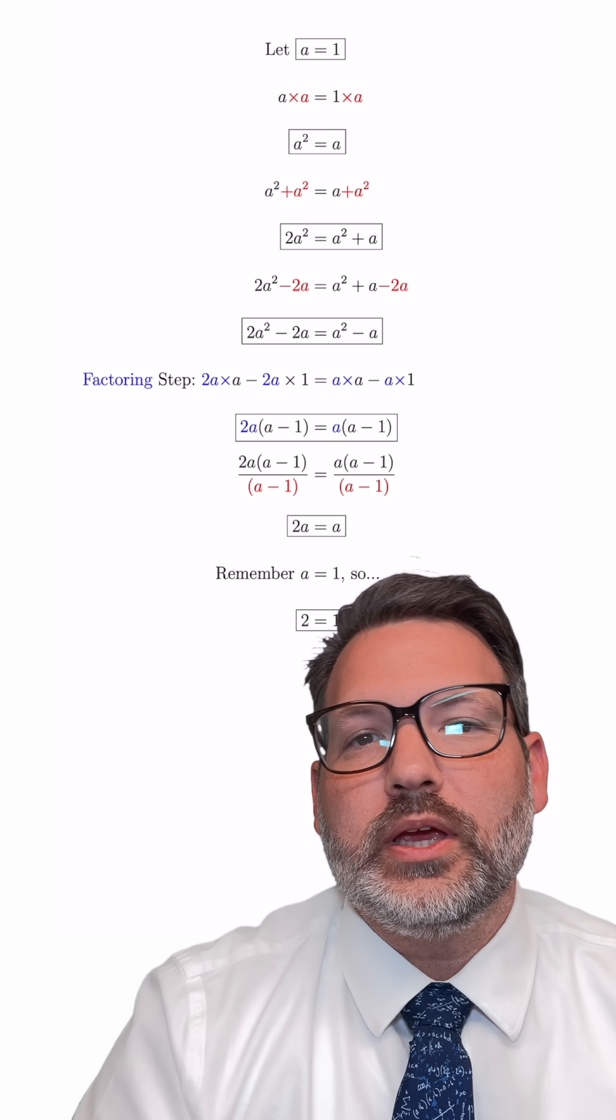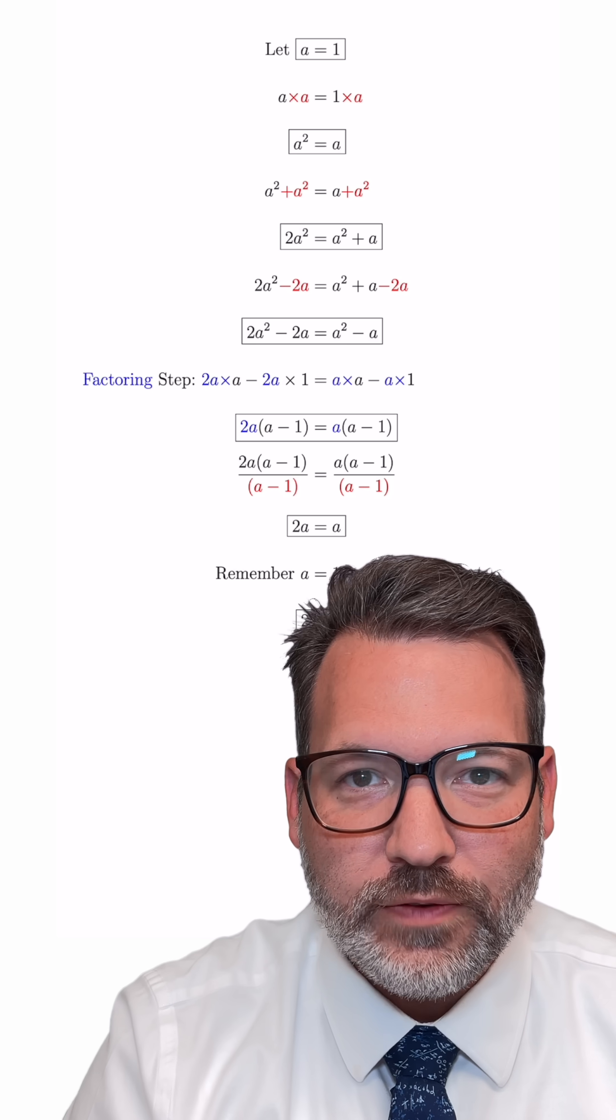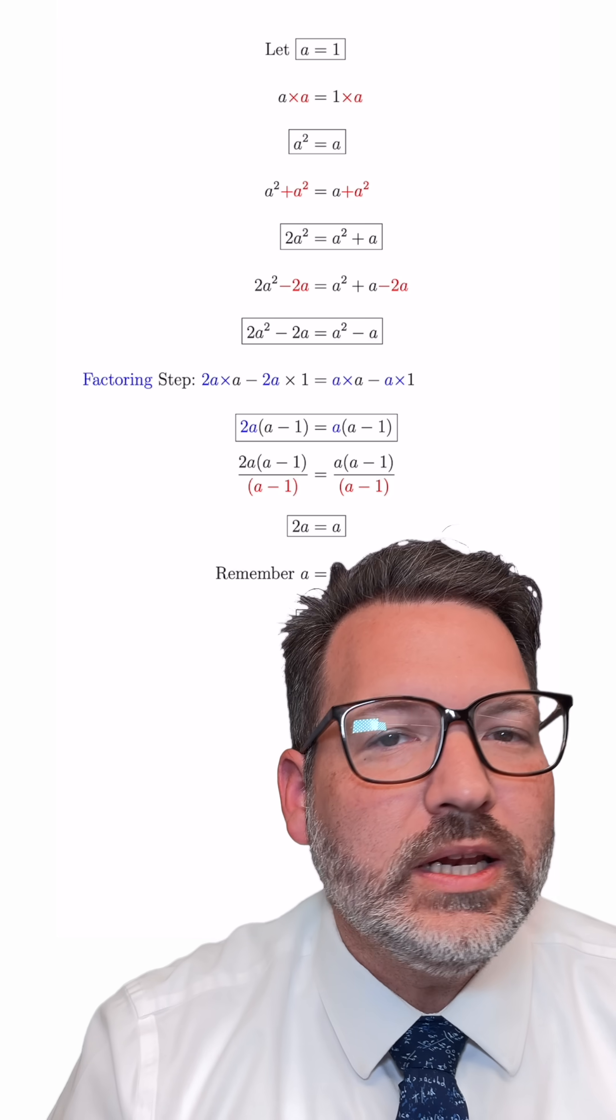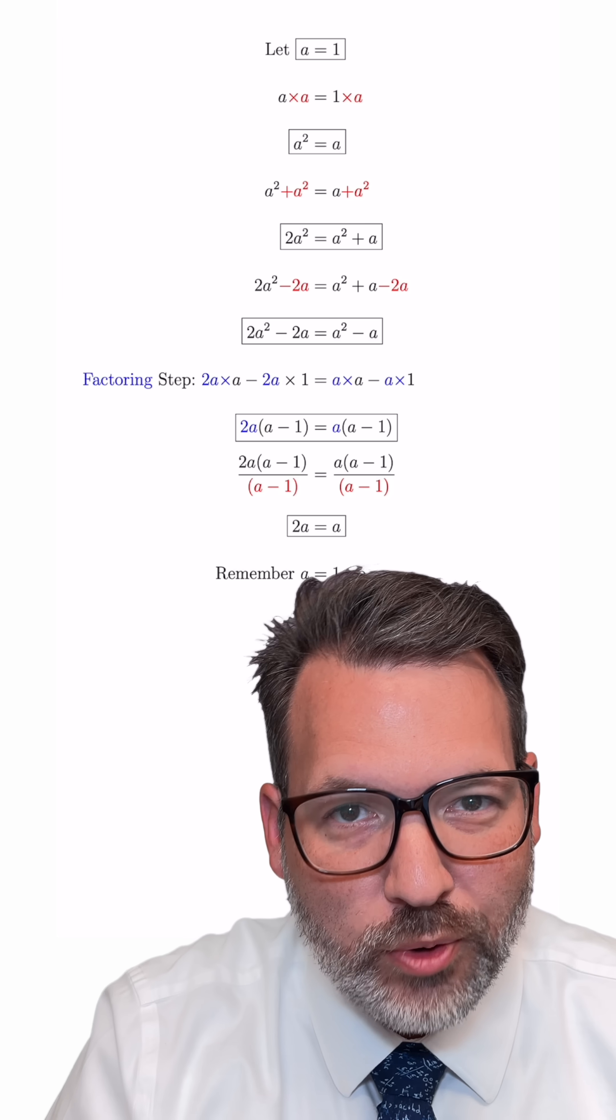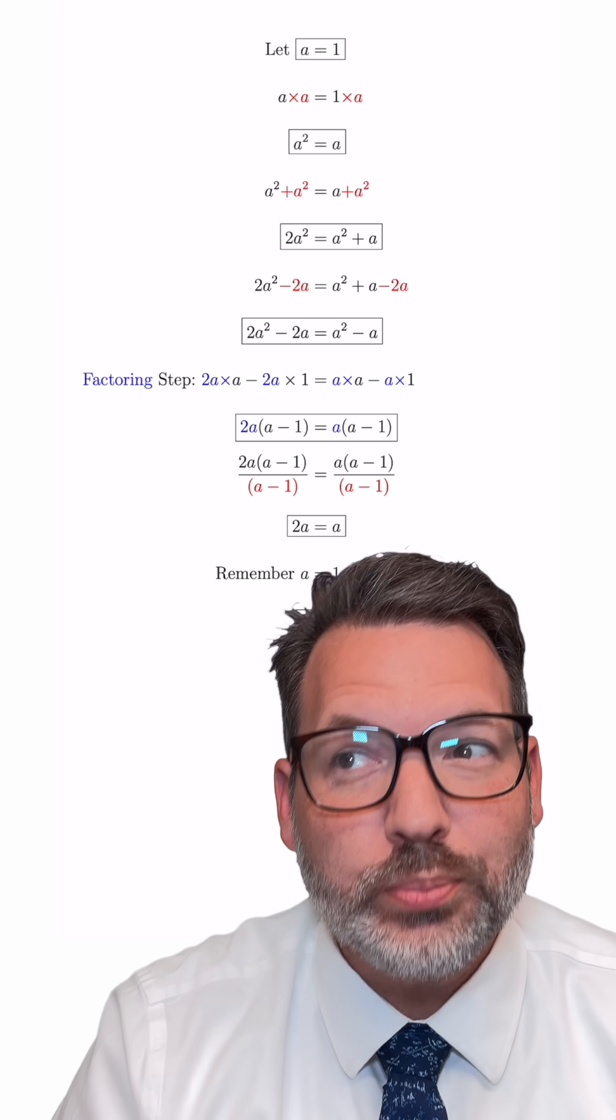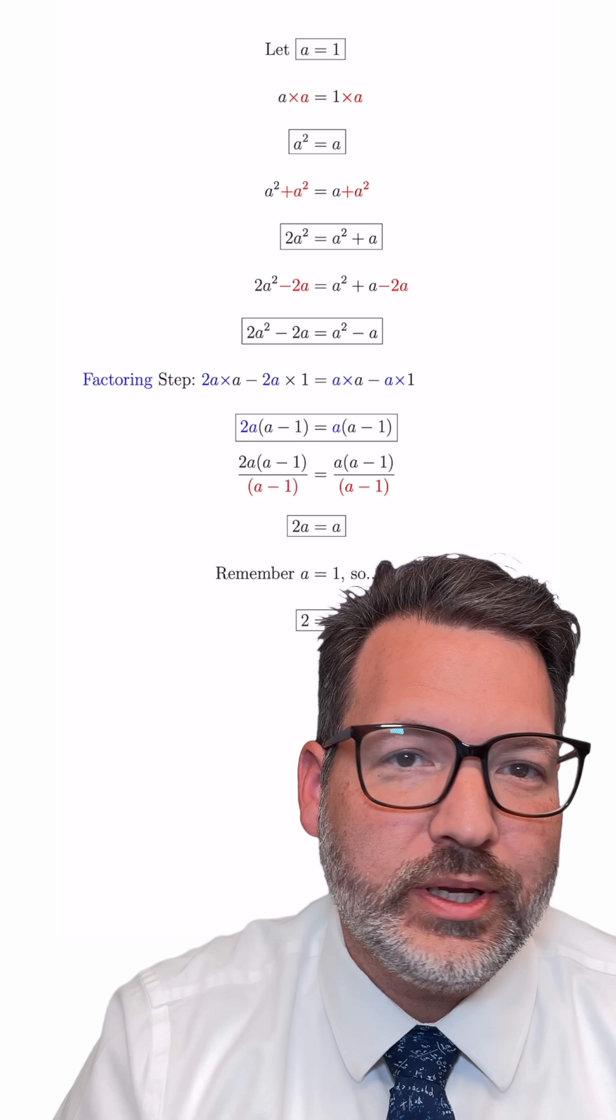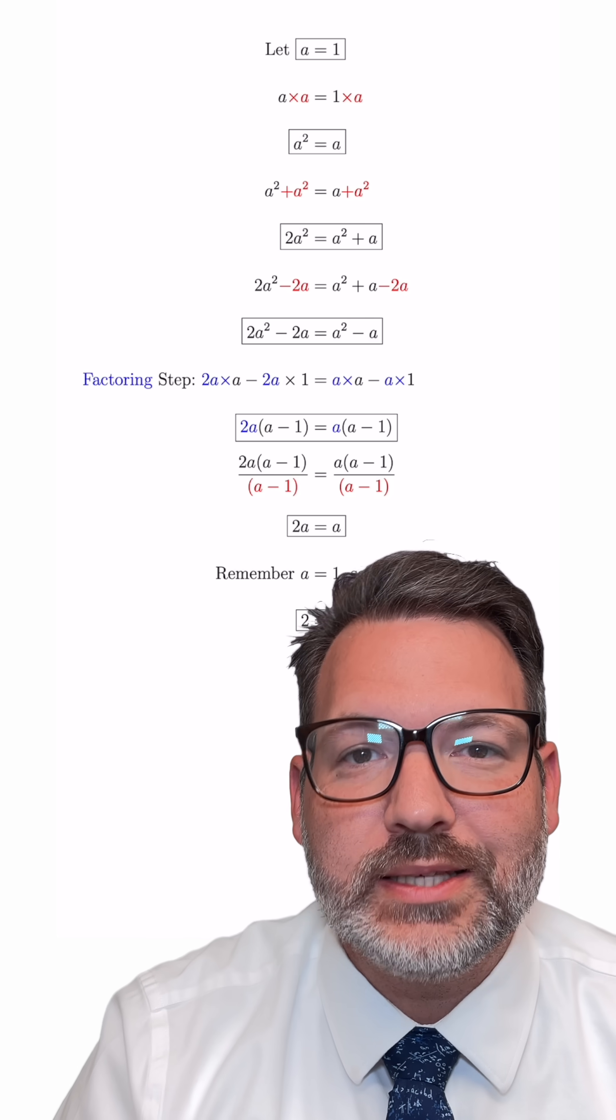Now again, something is wrong here and I'll leave it to you the viewer to figure out what that is. You can pause and look through the steps. But the fact that we can use such simple properties to prove something erroneous like two equals one is a pretty good reason to pay attention to the requirements for those properties. They don't always work precisely how you would think.